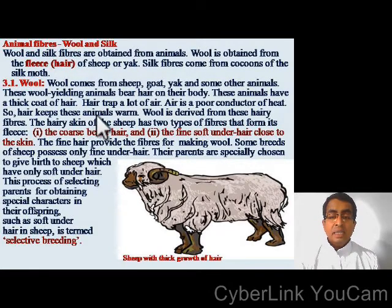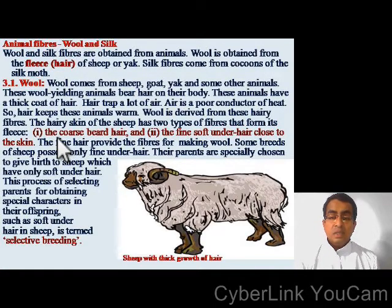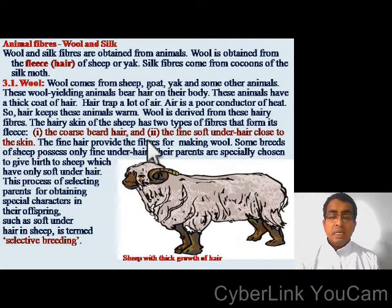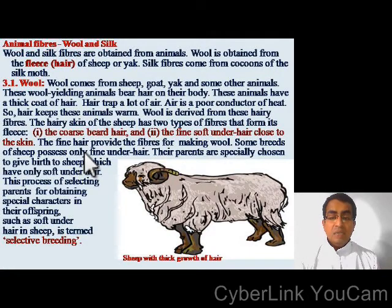The hairy skin of the sheep has two types of fibers that form the fleece. The first one is coarse beard hair, and the second one is the fine soft under-hair close to the skin. The fine hair provides the fibers for making wool.